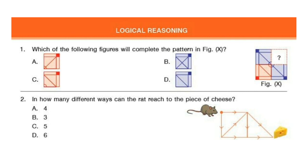Question 2. In how many different ways can the rat reach to the piece of cheese? You can pause the video if you require more time to calculate your answer. The correct answer is option C: 5.